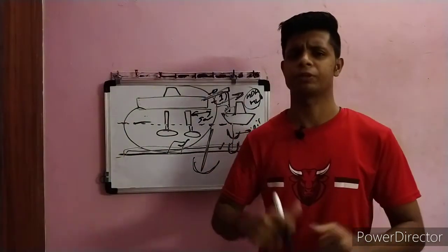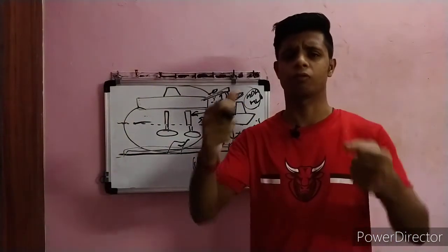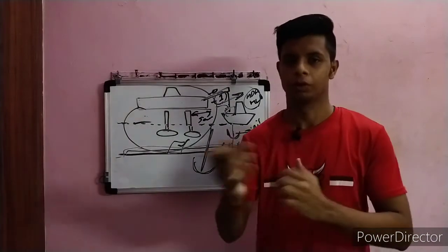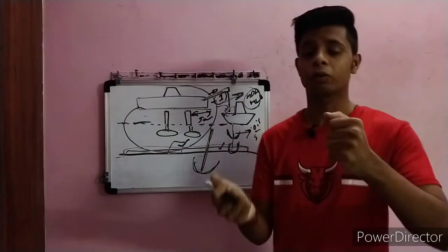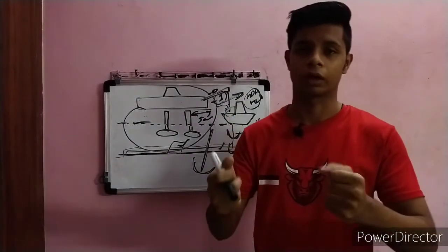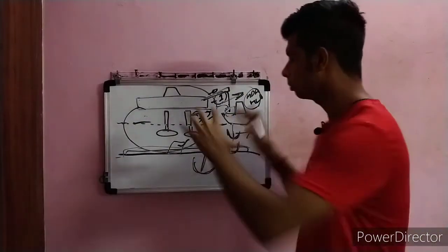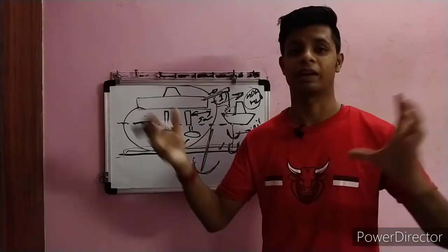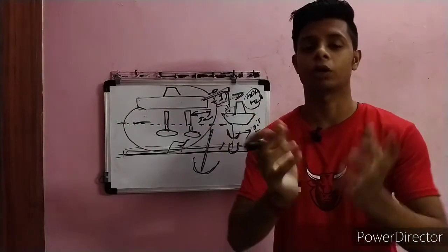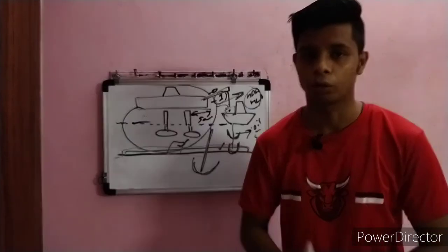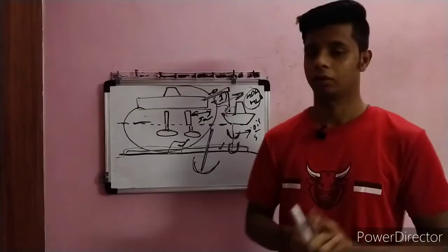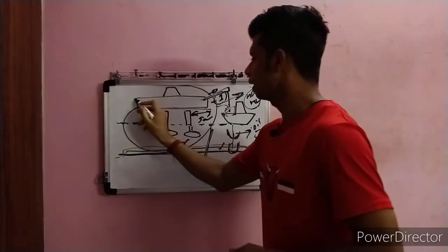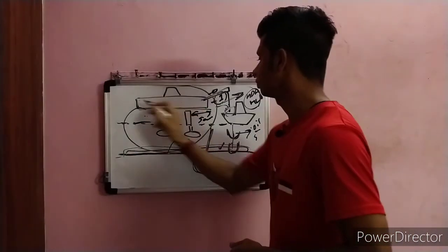The sixth hazard is improper working of the ship's steering. Maritime ships use a steering system to maintain their direction. If the steering is not working properly, the ship will lose its direction and can drift anywhere, potentially striking the offshore platform or vessel.